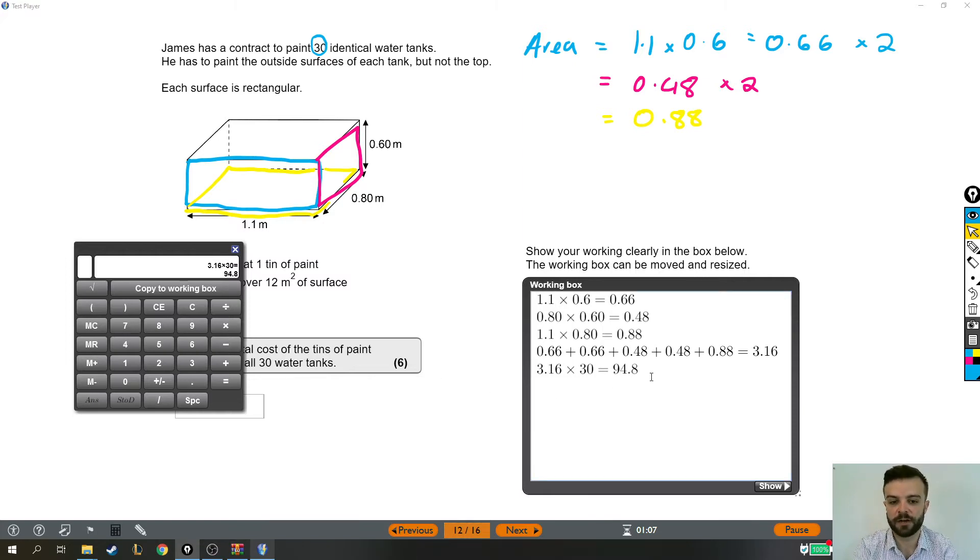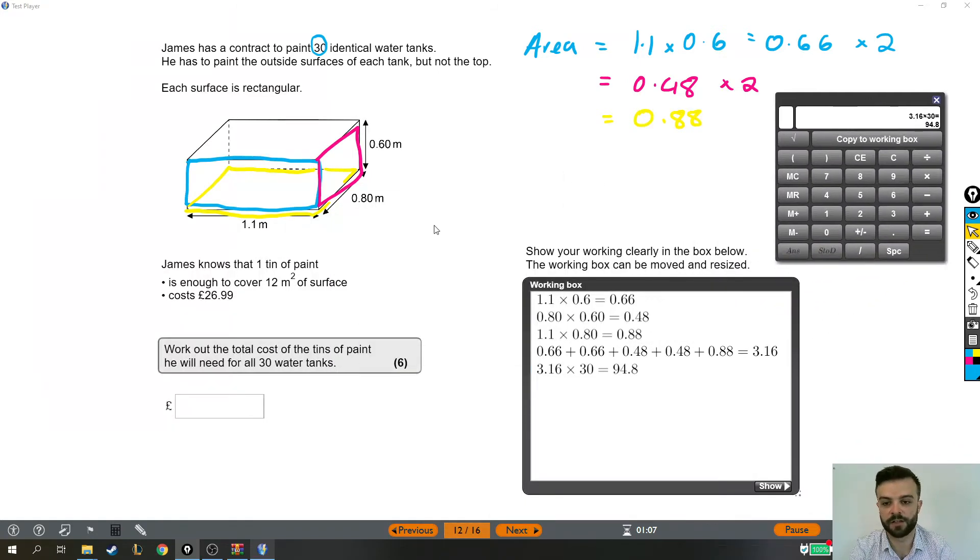So 94.8 is the area that needs painting, and now we can start dealing with this bit down here about the tins of paint that he'll actually need. So one tin of paint covers 12 meters squared. Just to make it clear, one tin would be 12 meters squared, so two tins, if you bought two tins, that would be 24 meters squared. And we need to get all the way to 94.8 meters squared.